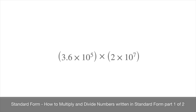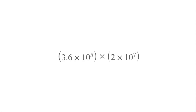In this tutorial, we quickly see how to do some operations with numbers written in standard form. We're going to work through two examples. The first is the one that we see here: we have 3.6 times 10 to the power of 5, which is multiplying 2 times 10 to the power of 7.